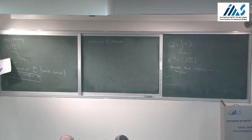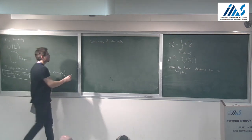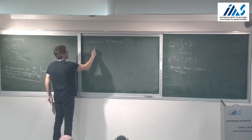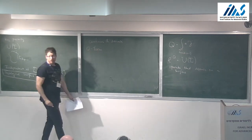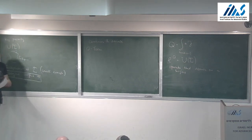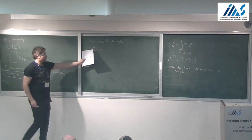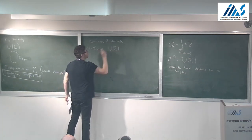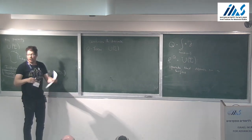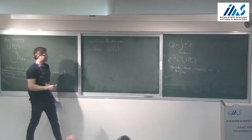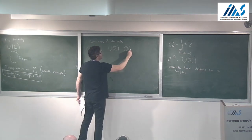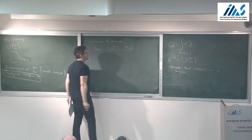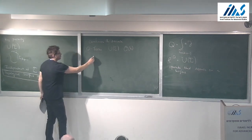Now let's see what these operators may act on. Zero-form symmetries are associated to surfaces of dimension D − 1, namely co-dimension 1. Zero-form symmetries are associated to some operators U(σ), topological operators which act on local operators O at some point X.